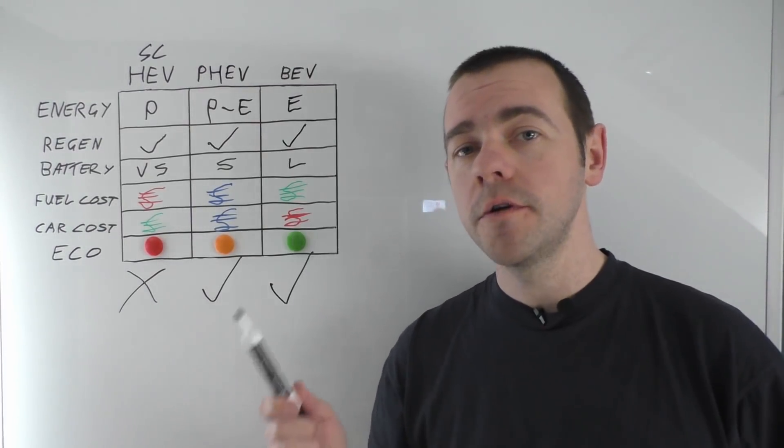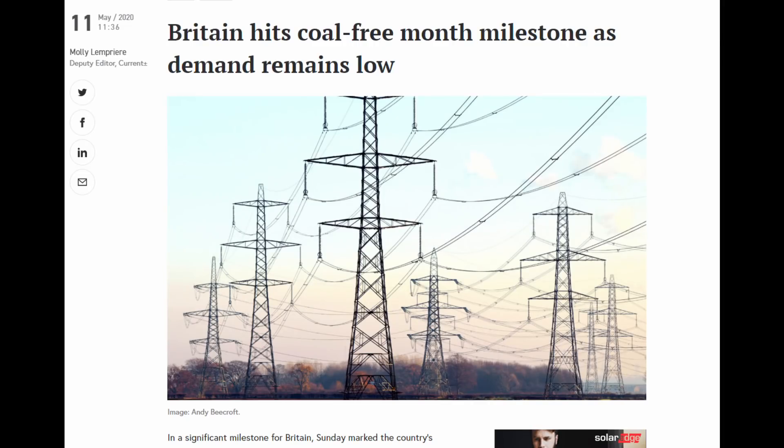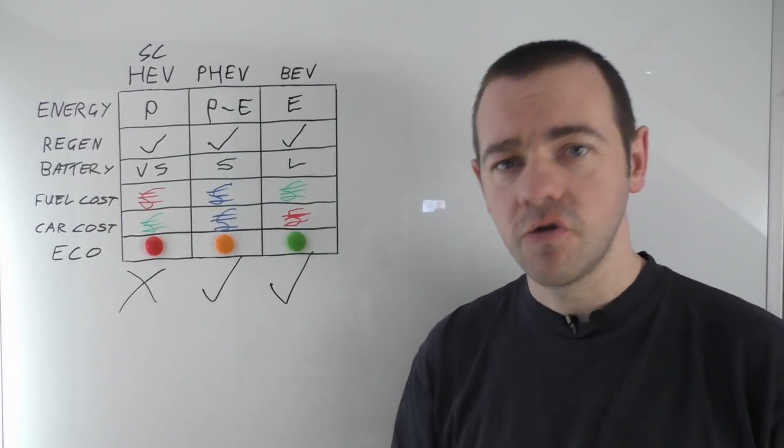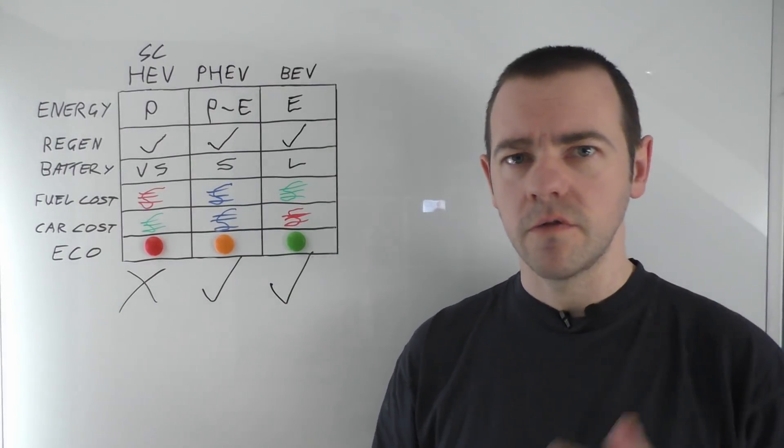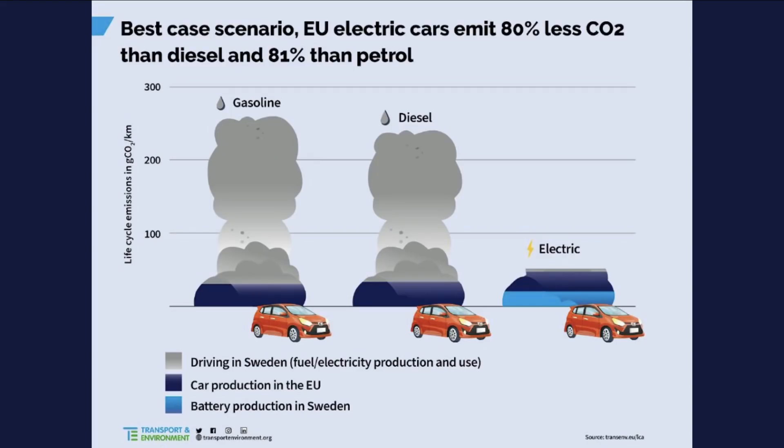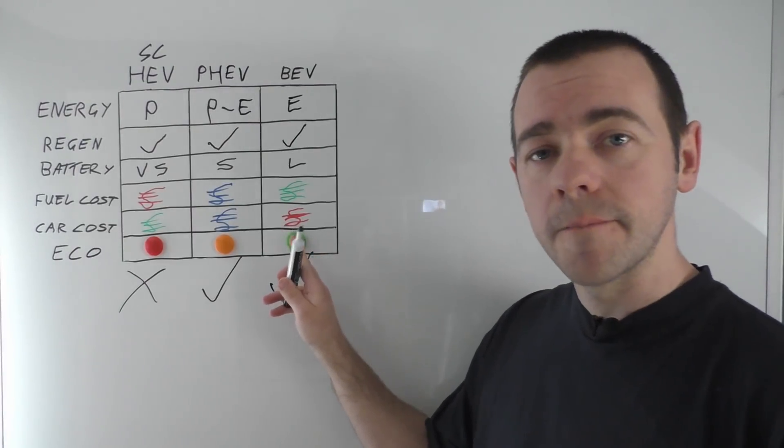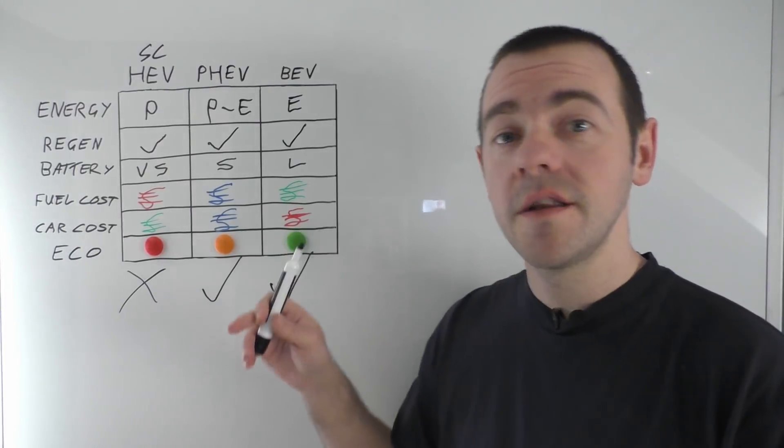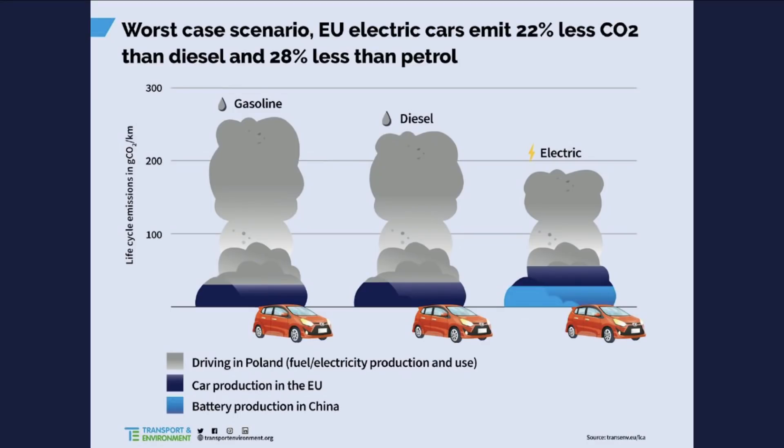But again there are many many many surveys and studies and you know proper scientific stuff here, peer-reviewed papers that always say the same thing: a battery electric vehicle or anything that's powered by electricity, even on a dirty grid, is still cleaner over its lifespan than a petrol engine car.